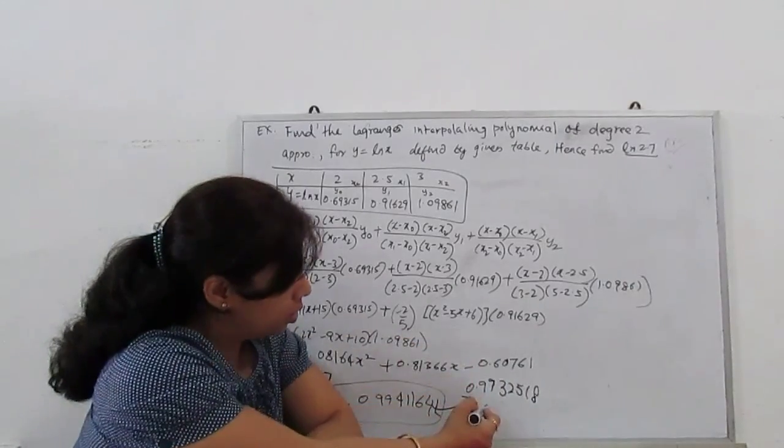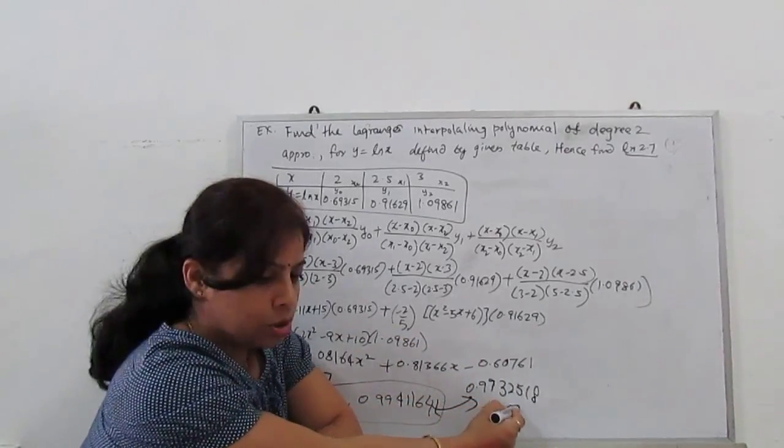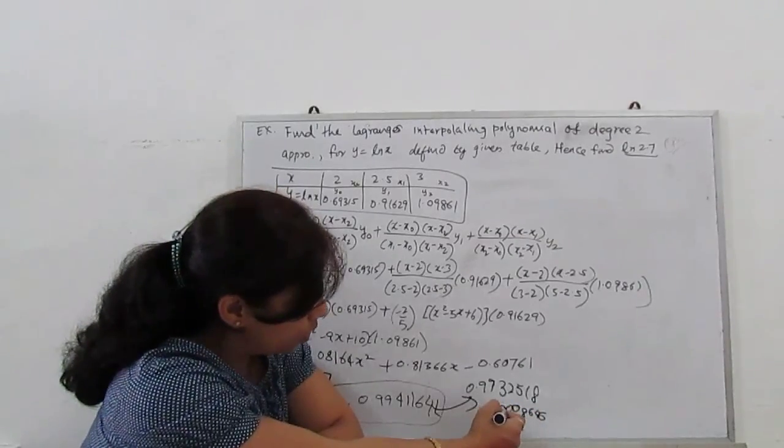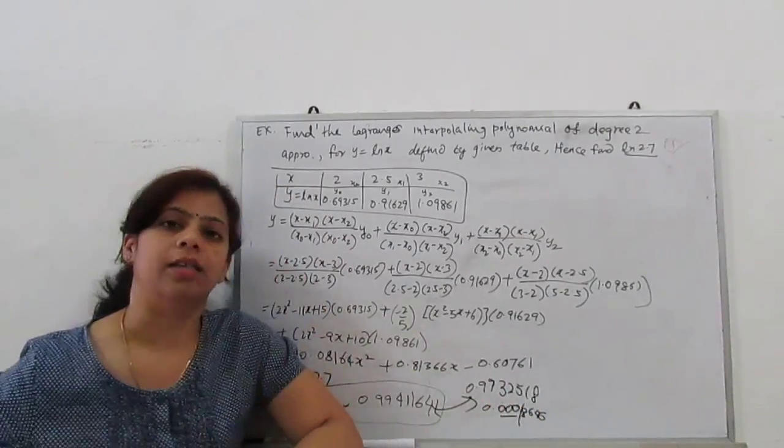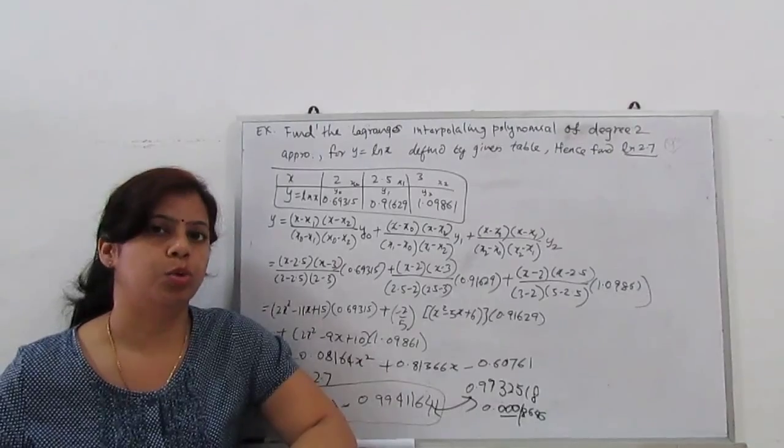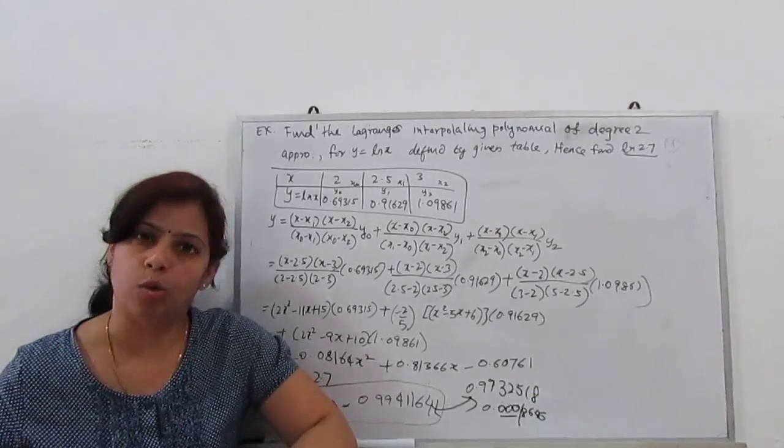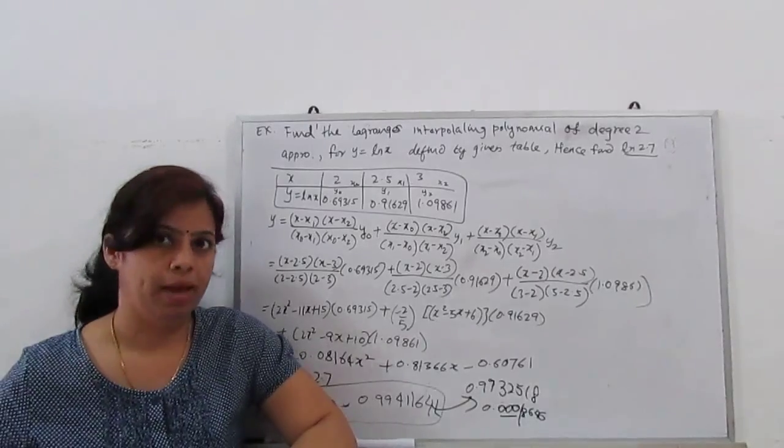Accurate value is 0.9932518. This is our value, this is accurate value. So error is 0.0008646. Error is very less. So we can use to calculate exponential function, logarithmic function, sine cosine function and many more.